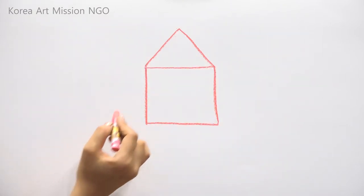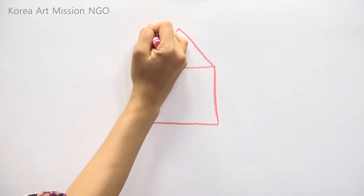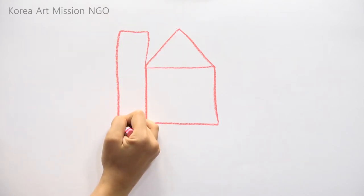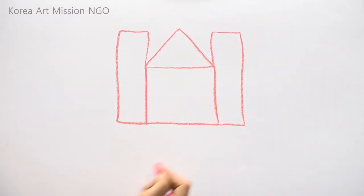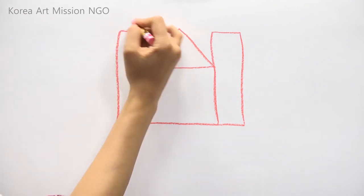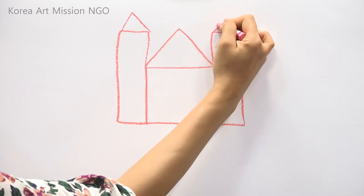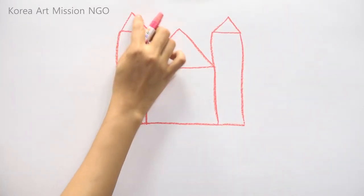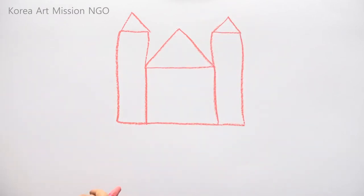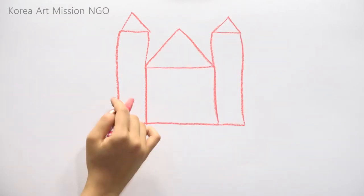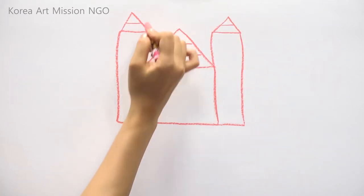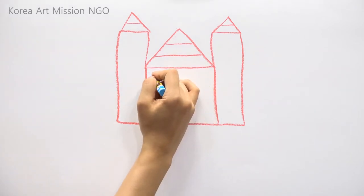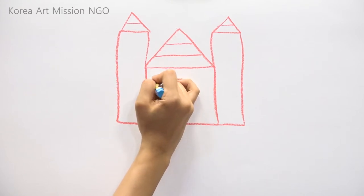And then, next to this, I will draw a long rectangle and a triangular shape on the rectangle to make the roof. And then, next to this, I'll put this pattern on the roof. And then I'm going to draw a window in the house. I'll mark the window frame.